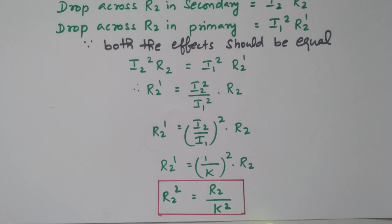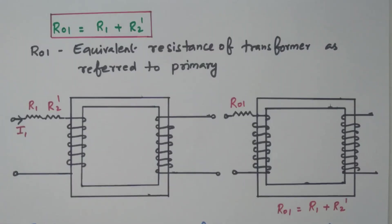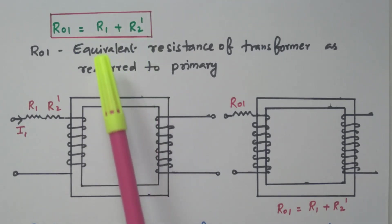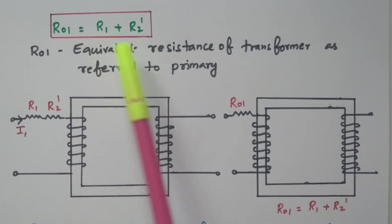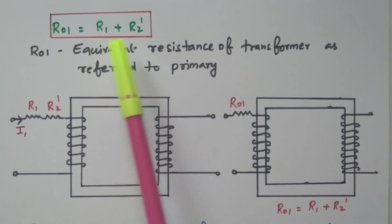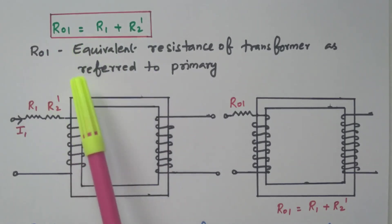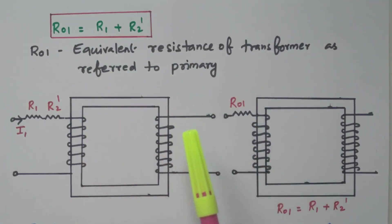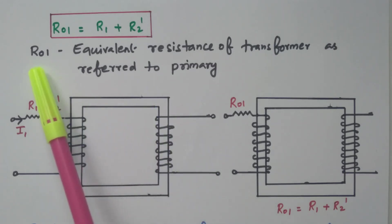In general, if any parameter is transferred from secondary to primary, it is divided by K squared; while transferring from primary to secondary, it is multiplied by K squared. The total resistance in the primary, R01, referring both primary and secondary, is nothing but R1 plus R2 dash. R1 is the resistor of the primary, and R2 dash is the secondary resistor transferred to the primary. So R01 is the equivalent resistance of the transformer as referred to the primary.